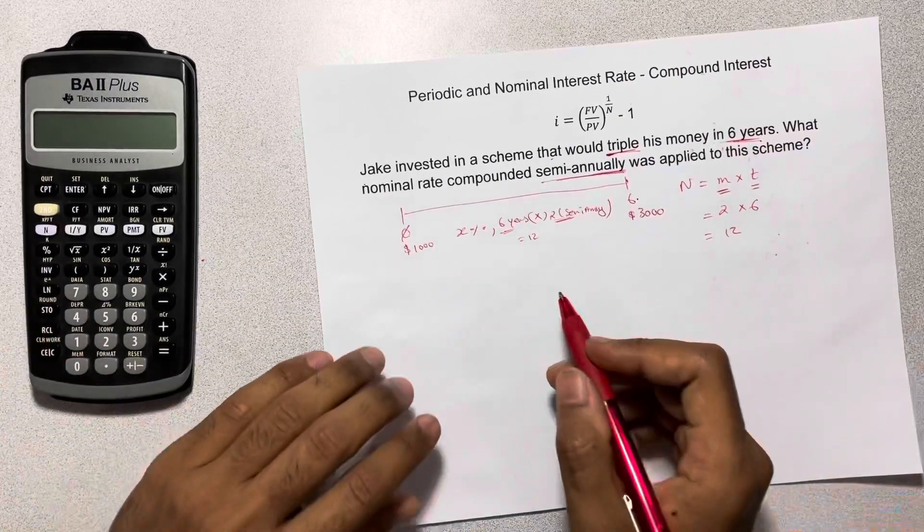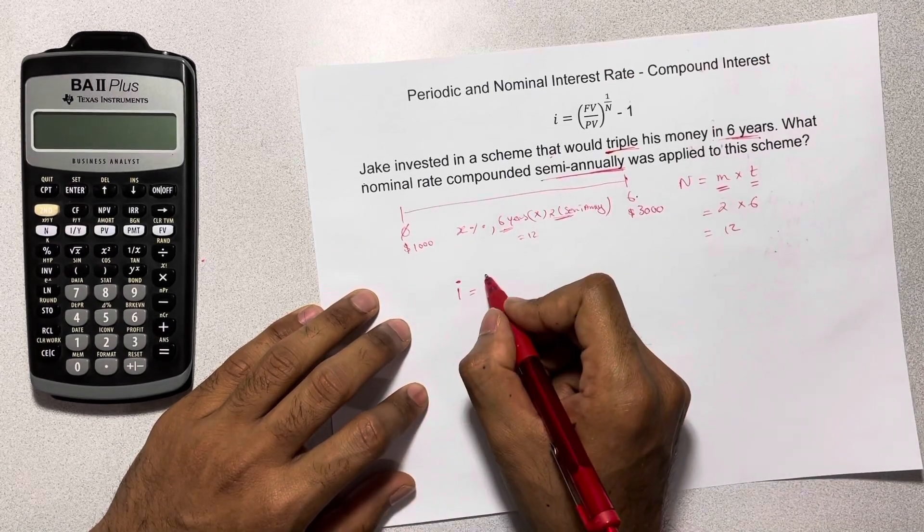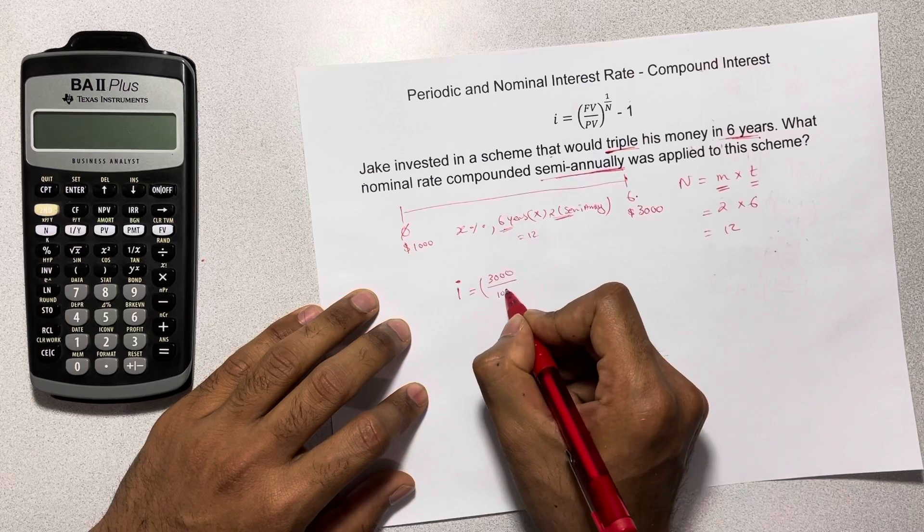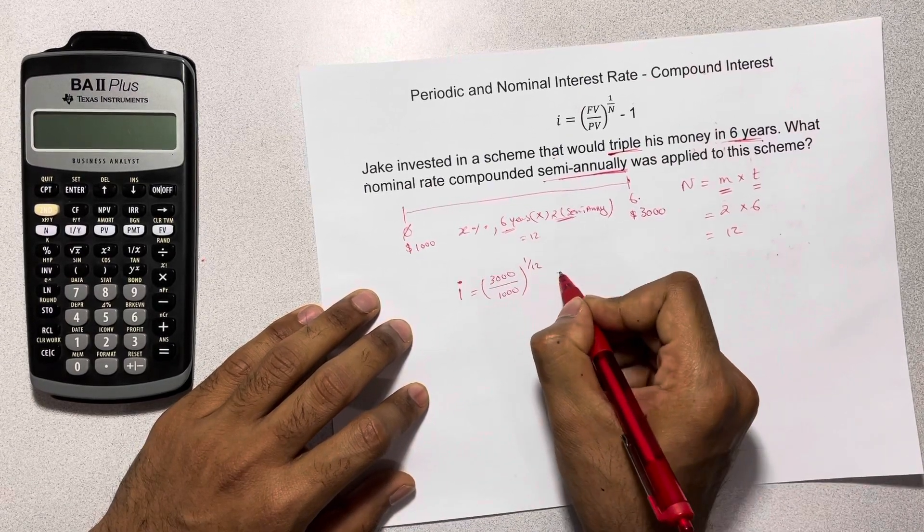So now that we've identified that, let's quickly jump into the equation. So i is equal to future value, we know that as 3,000 divided by 1,000 to the power of 1 over 12 minus 1.